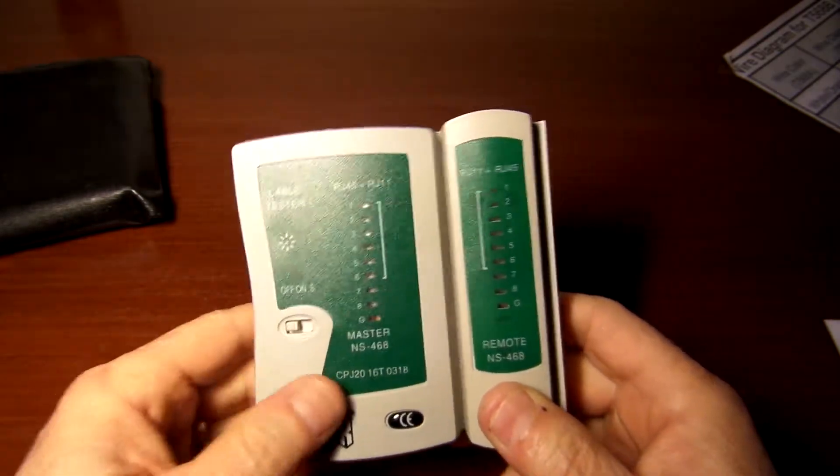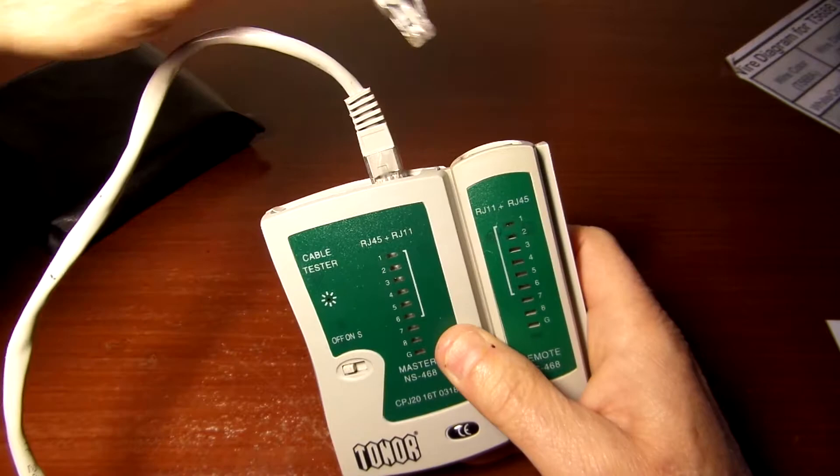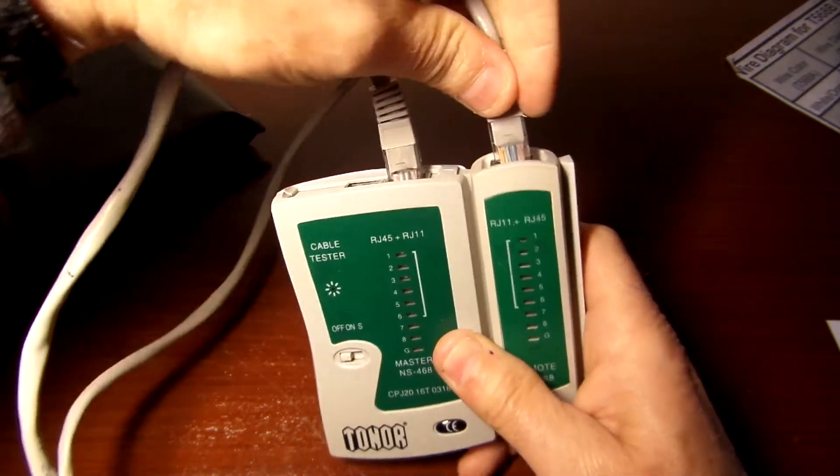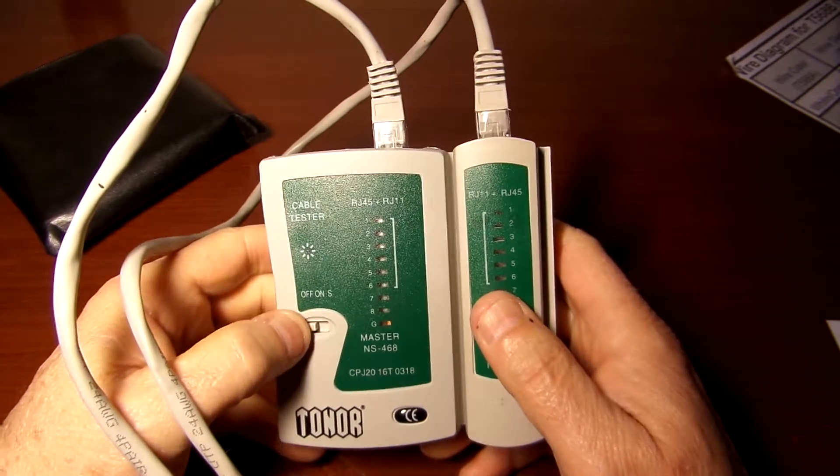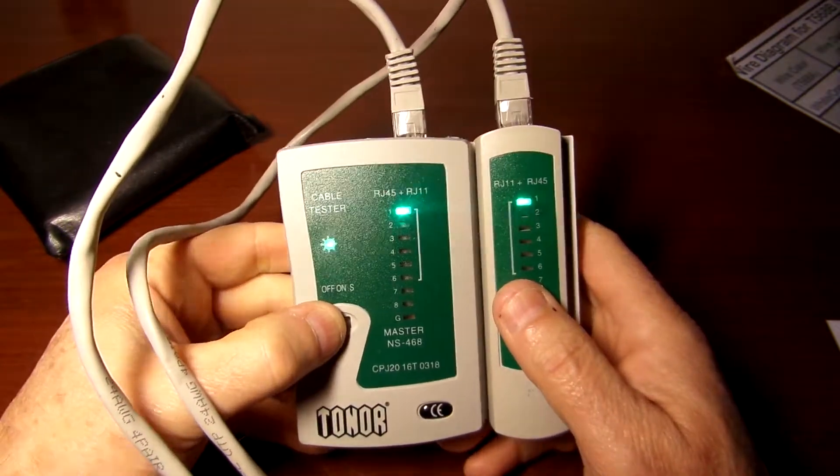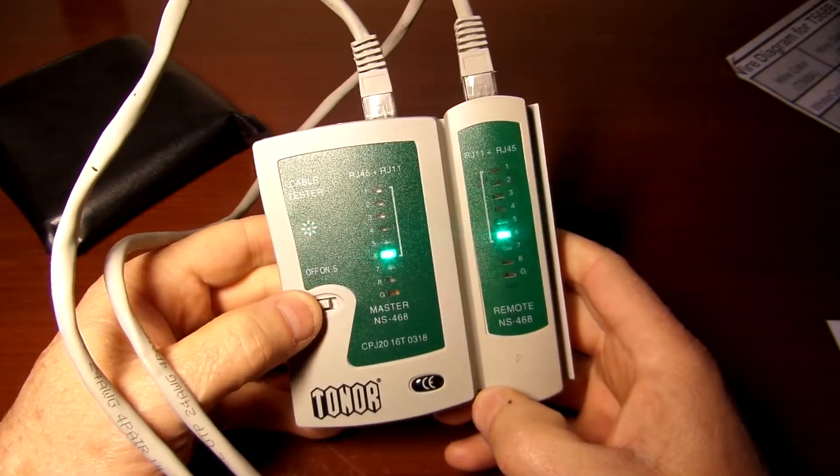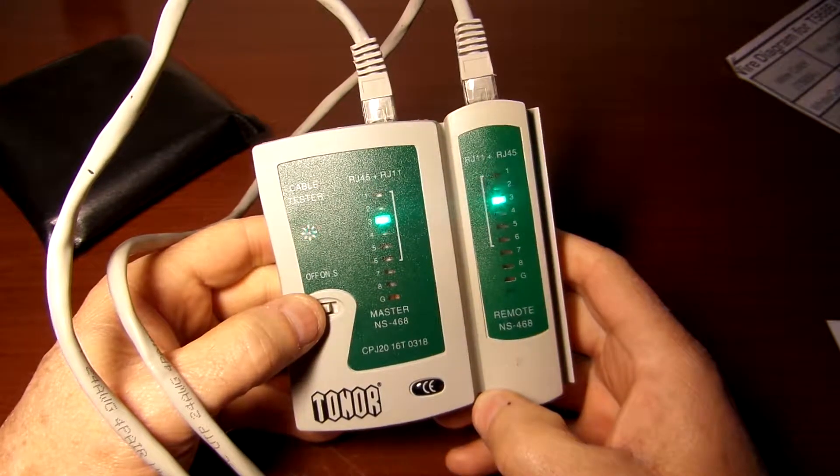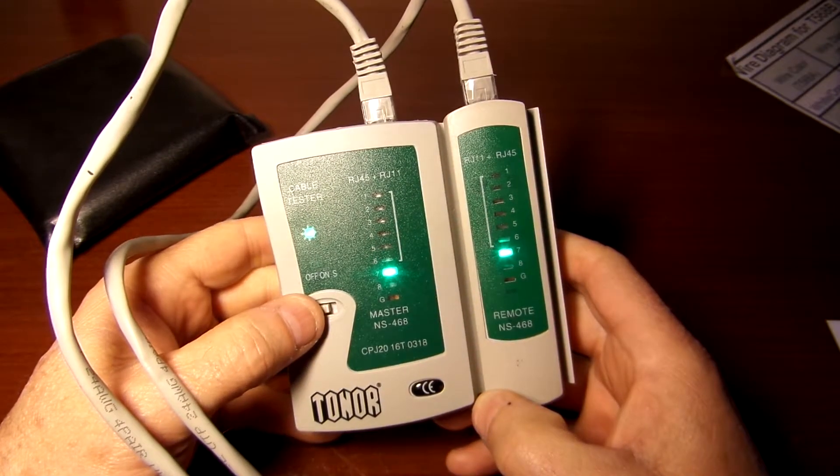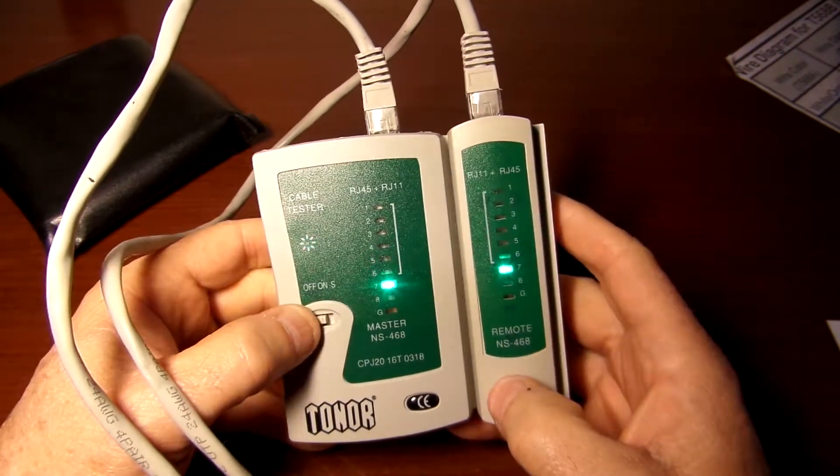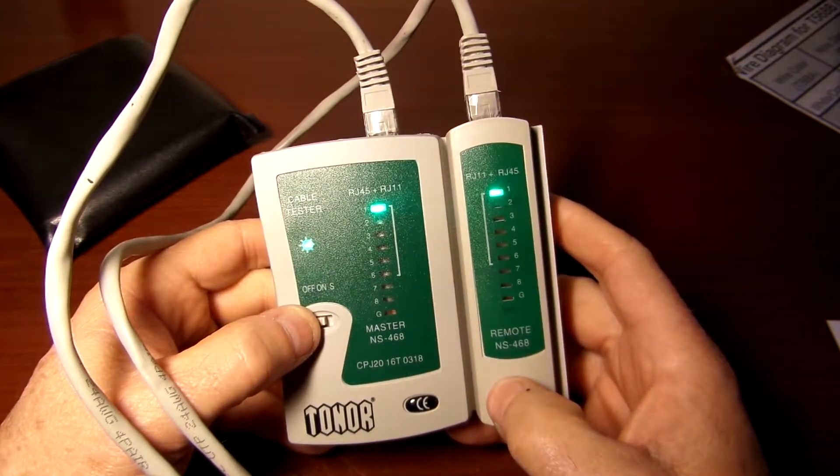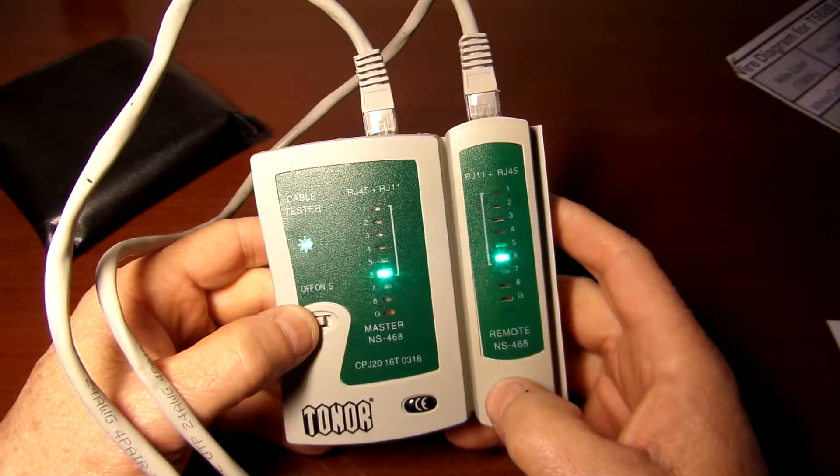Once you've crimped your cable, you simply plug both ends of the cable in. This has two modes: a fast mode and a slow mode. Basically what this is doing is checking continuity, making sure that the contacts are together on both ends, but more importantly it's making sure that you have the proper sequence.